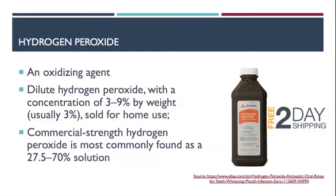As many of us know, hydrogen peroxide is an oxidizing agent. Although it exists in dilute concentrations—typically 3% for home use—it also exists in much more concentrated solutions. This illustrates an important principle: any chemical, as benign as you think it is, can be dangerous at a high enough dose or concentration. That is a unifying principle to remember. Hydrogen peroxide varies in concentration.